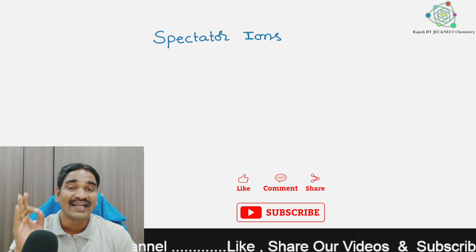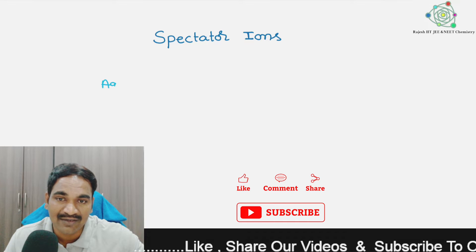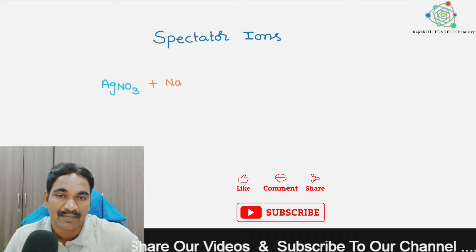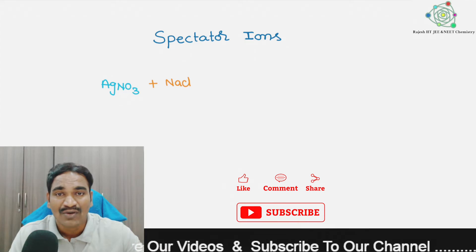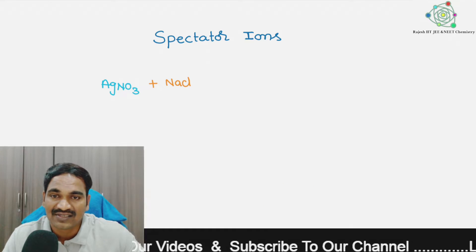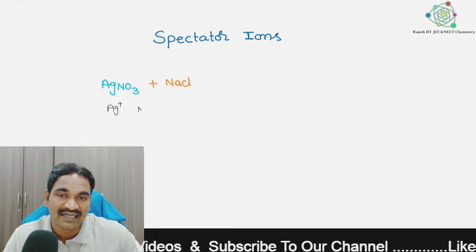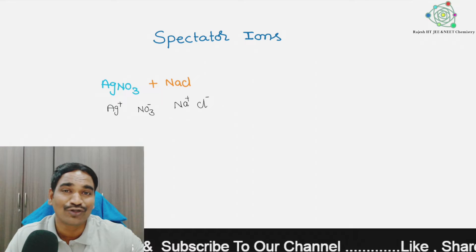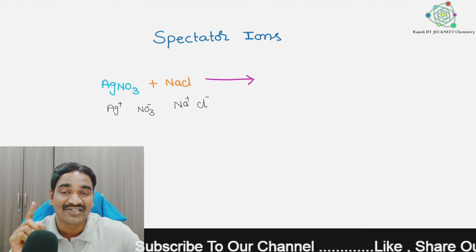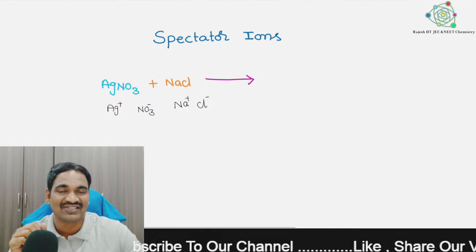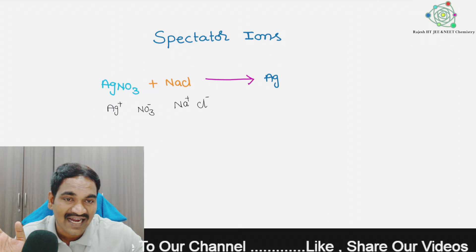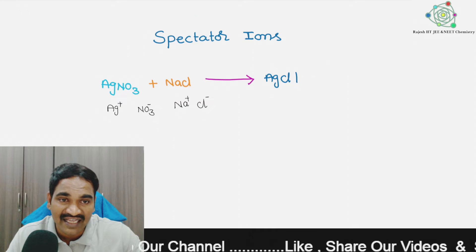I will explain with one example. Here I am taking AgNO3 mixed with NaCl. Whenever you mix these two, the ions present inside these salts are Ag+, Na+, NO3-, and Cl-. When mixed together, those ions react with each other. Here, Ag+ and Cl- react with each other and form a precipitation.